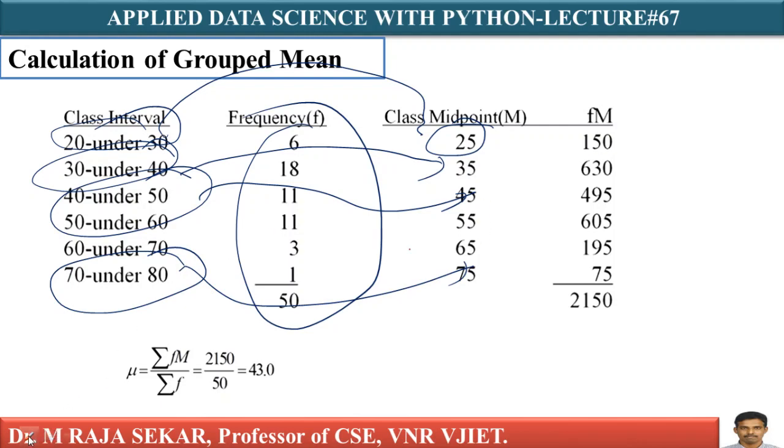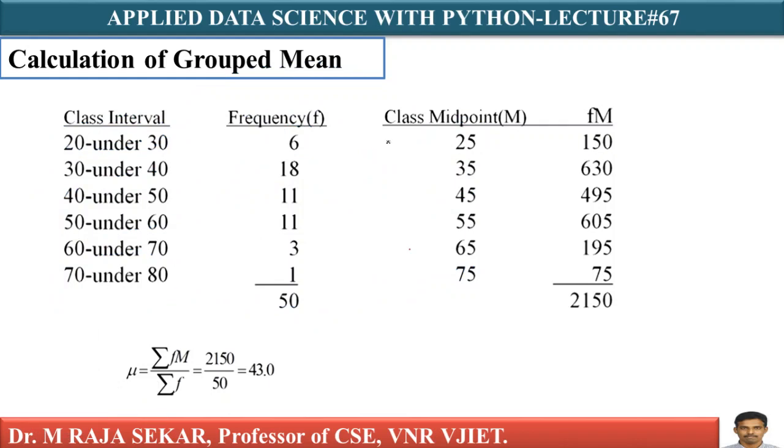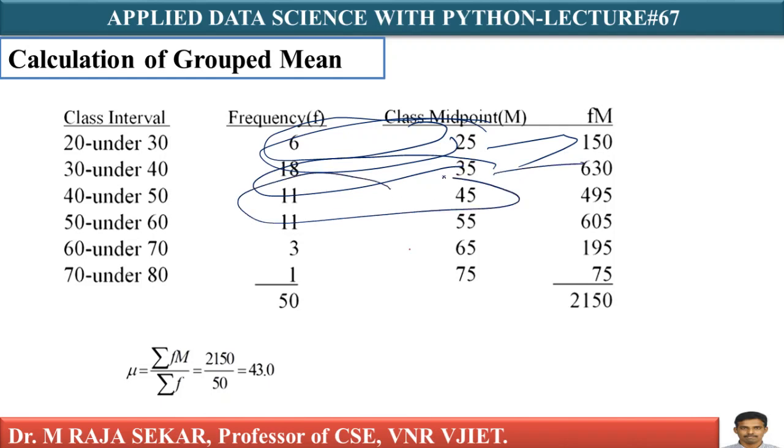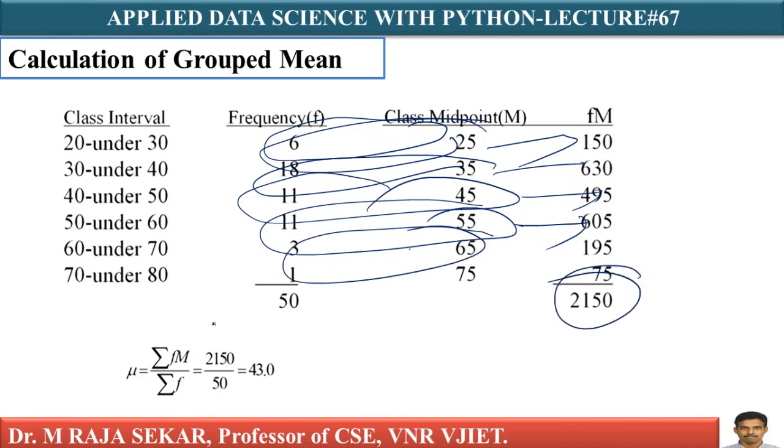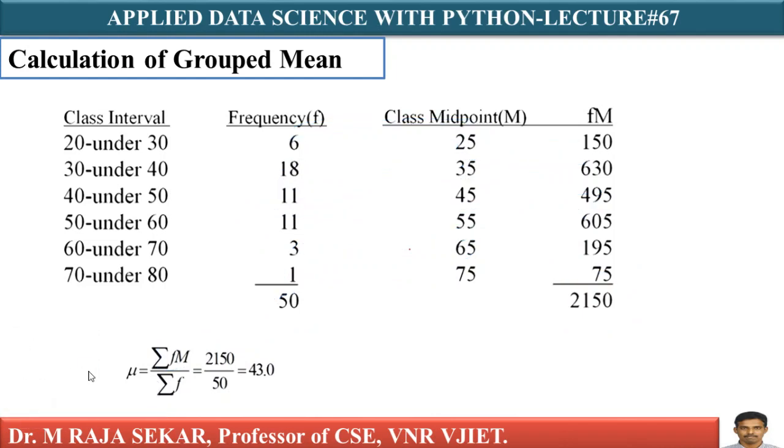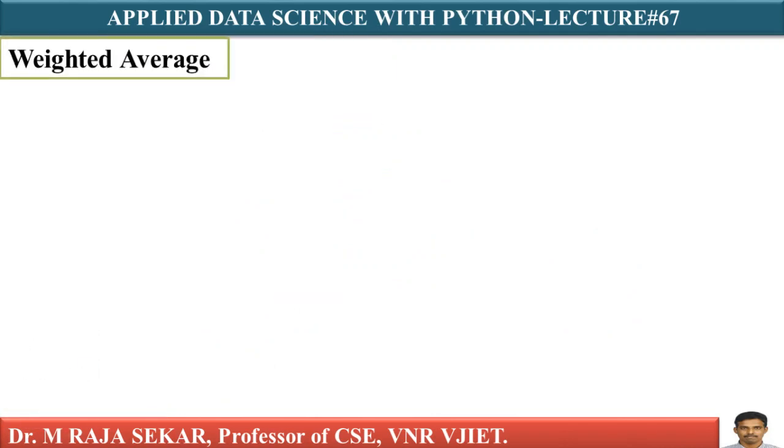You have to multiply middle points with frequencies. 25 into 6, that is 150. 18 into 35, that is 630. 11 into 45, that is 495. 11 into 55, that is 605. This is sigma fm. Sigma fm is 2150. Sigma f is 50. If I calculate, you are getting 43.0. This is known as mean, the population mean.